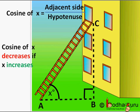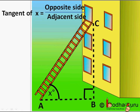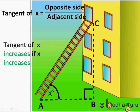And tangent of X equals opposite side BC by adjacent side AB. As X increases, the opposite side BC is becoming more and the adjacent side AB is becoming less, so tangent X increases. Tangent of X increases if angle X increases, and vice versa — if angle X decreases, tangent of X decreases.